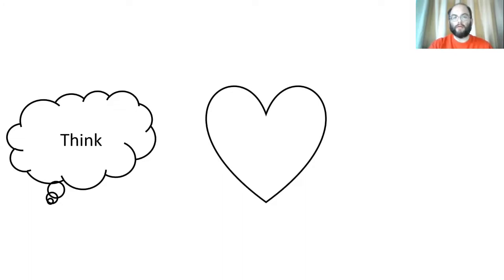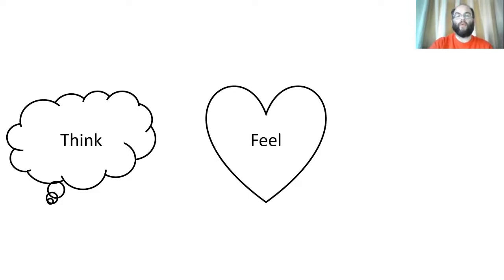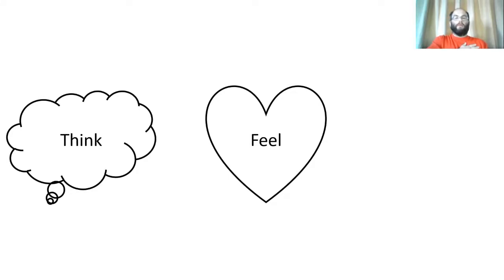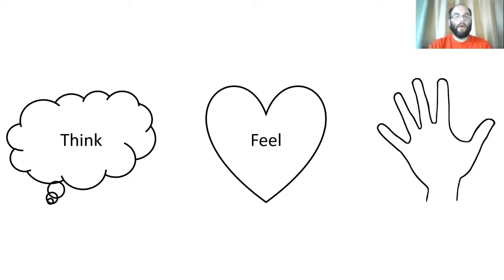Next, you have the heart. The heart is the center of this. What do you think the heart represents? Yes, it represents our feelings and our emotions. Go ahead and write the word 'feel' inside that heart. For 'feel,' I want you to put your hand over your heart. Our last one is the hand. The hand represents our actions — things that we do. So write 'do' inside the hand.